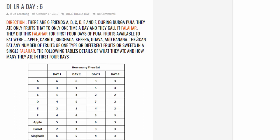Fruits available to eat were apple, carrot, singhara, kheera, guava and banana. They can eat any number of fruits of one type or different types or sweets. But sweets is again redundant data in the Falahar because in the data we do not have sweets.